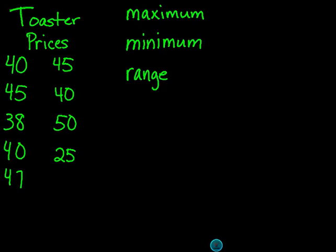Today we're going to be talking about three things in a set of numbers: maximum, minimum, and range. We are going to be using toaster prices as our set of numbers. The maximum number is going to be the biggest number that we see.